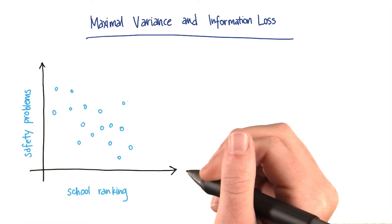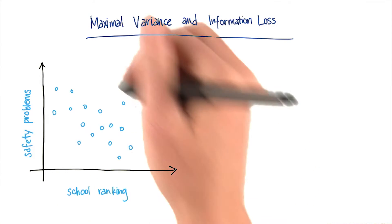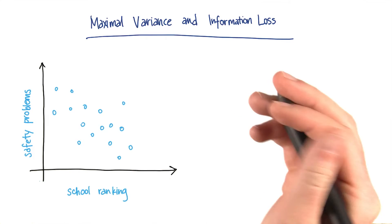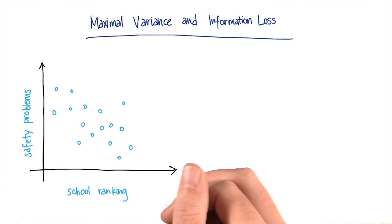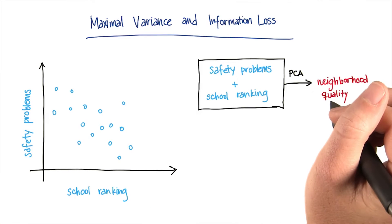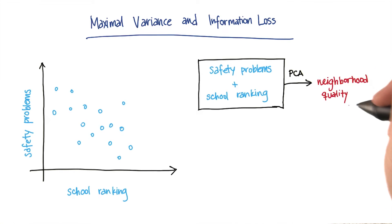Now let's look at the neighborhood information for our housing data. On one axis, I have the number of safety problems in a given neighborhood. On the other axis, I have the school ranking of that neighborhood. I'm going to use PCA to combine these two features into a single feature that roughly gauges the quality of the neighborhood.